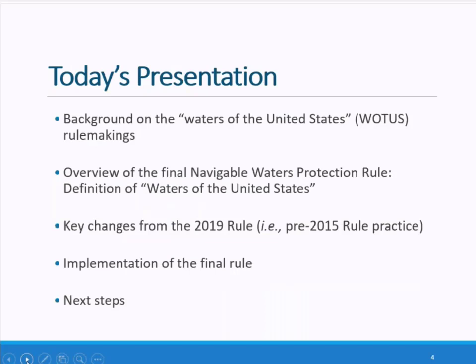For today's presentation, we will provide a background on Waters of the U.S., take a close look at the elements of the final rule — what waters are in and what are out — and some definitions of terms. We'll highlight some differences compared to the 2019 rule, and highlight how the agencies will implement the final rule and some next steps. The pre-publication version of the final rule and preamble, various fact sheets, and supporting analyses can be found on our agency websites.